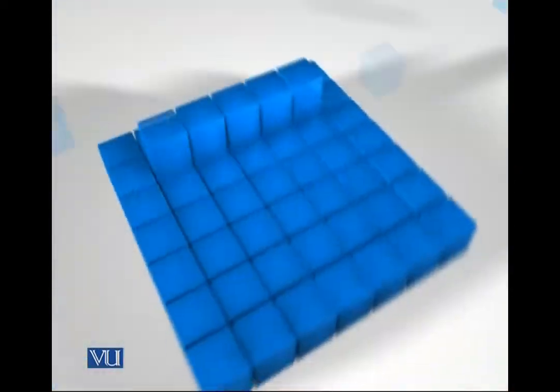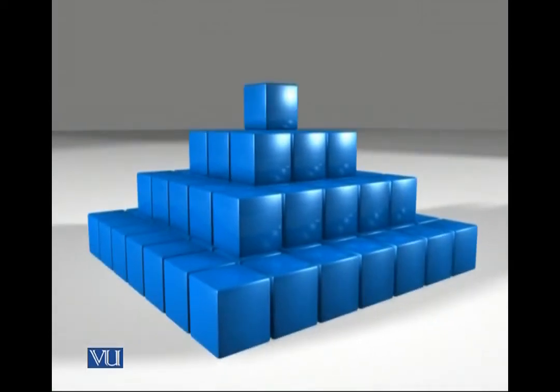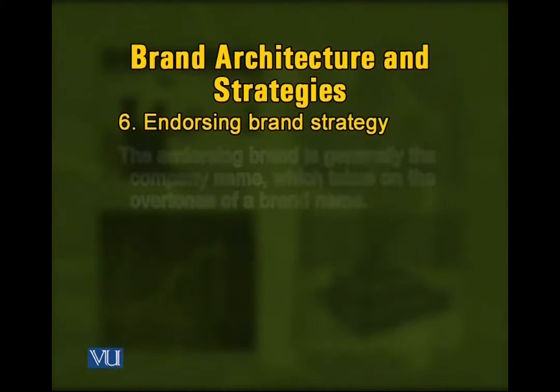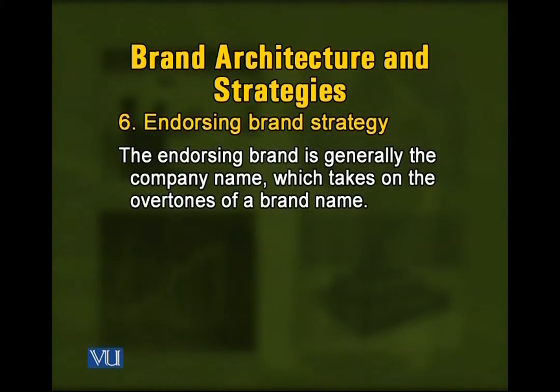Let us now talk about the sixth classification. These classifications, let me clarify, are very general. Most companies operate within these six different sets of branding policies. If a company comes up with something different, it has every right to do so, but generally companies operate within these frameworks. The sixth one is the endorsing brand strategy. The endorsing brand is generally the company name which takes on the overtones of a brand name.